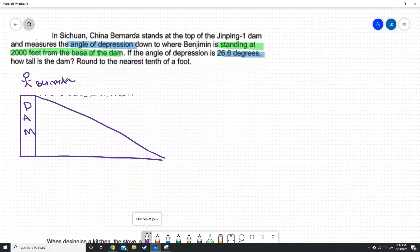Of course, we're making a right triangle, even though that doesn't really look like it. That's a right triangle. And Bernarda found that this angle here is 26.6 degrees. Benjamin is standing here, and he is 2,000 feet from the base of the dam.